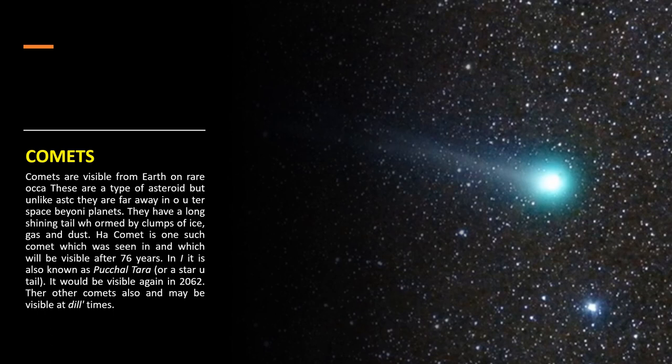Comets are visible from Earth on rare occasions. They are a type of asteroid but, unlike asteroids, they are far away in outer space beyond the planets, whereas asteroids are close to the planets. Comets have a long shining tail which is formed by clumps of ice, gas and dust.